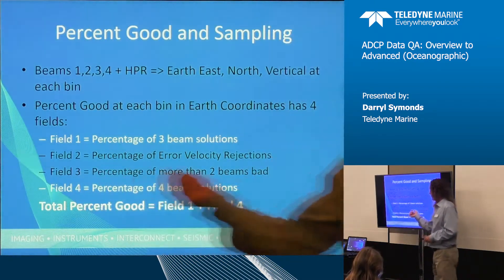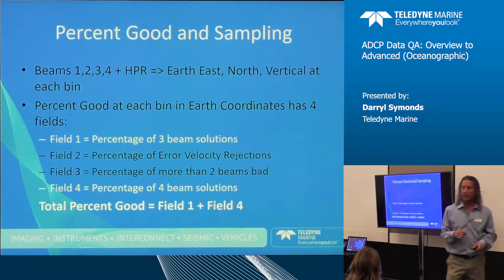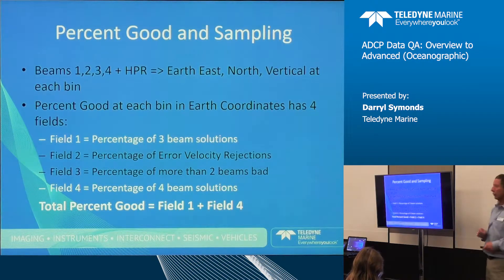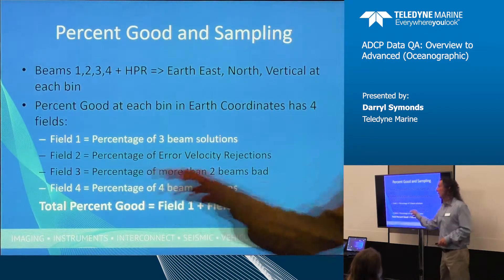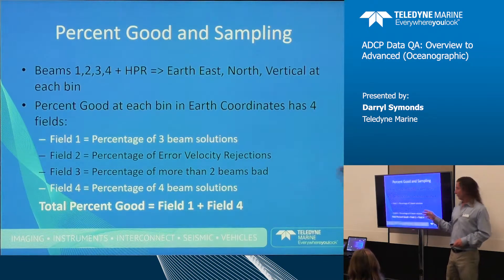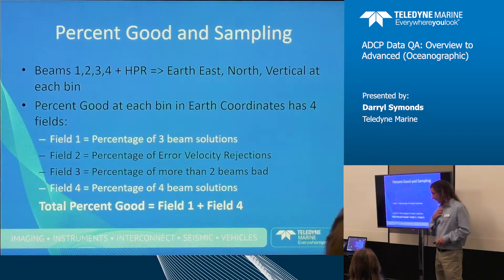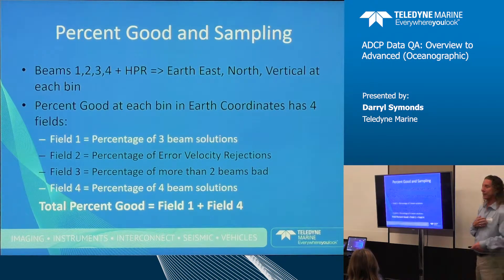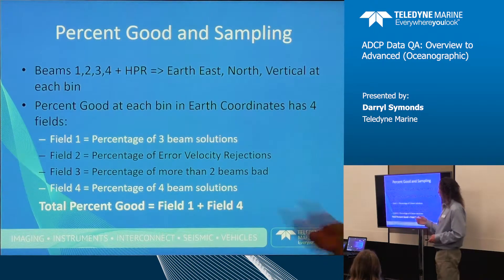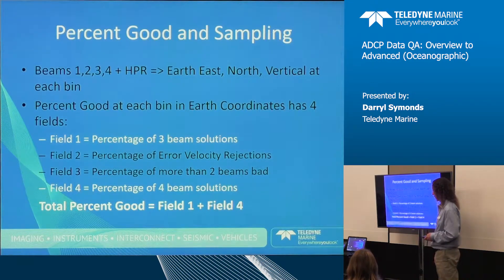The two center fields tell us how many times error velocity caused us to reject the data, and field three tells us the number of times where more than two beams were bad — this would be due to the false detection threshold or signal-to-noise being insufficient.